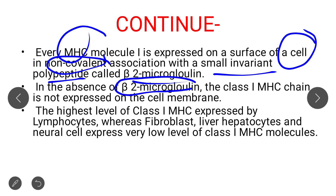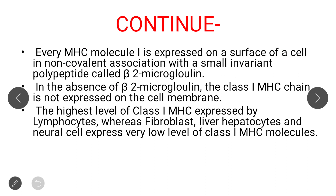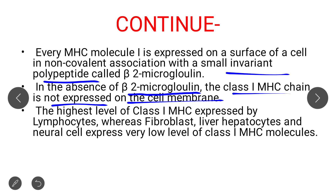If beta-2 microglobulin is absent and not expressed on the cell membrane, then the Class 1 MHC chain is not expressed on the cell membrane either. So basically, beta-2 microglobulin is an invariant polypeptide chain which helps in the non-covalent association between the cell membrane and the MHC molecule.